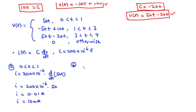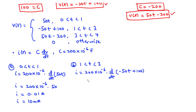For interval B, 1 less than t less than 3: I = 200 times 10 to the power negative 6 times d/dt of (-50t + 100). Differentiating gives -50, and the constant 100 differentiates to 0. So I = 200e-6 times -50, giving negative 10 milliampere.